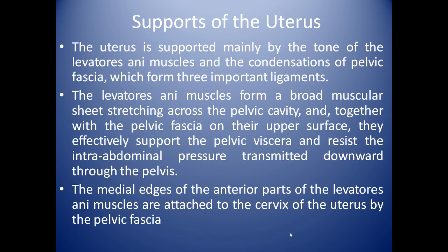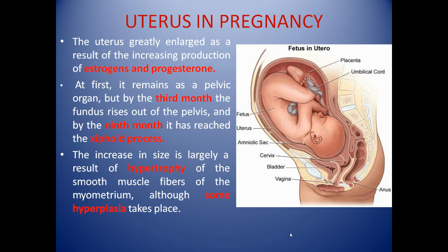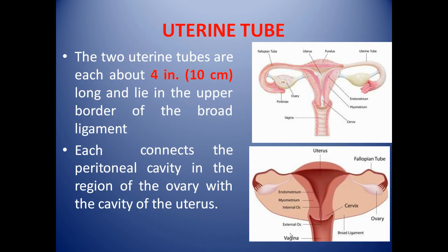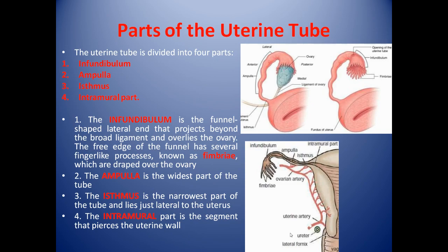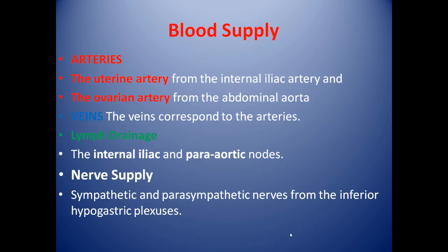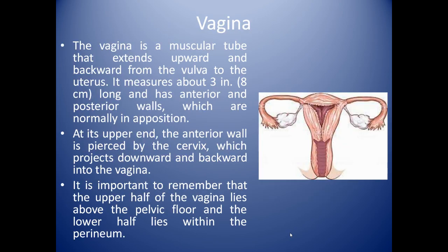We have also studied the supports, that is the ligaments, and how the uterus appears in pregnancy. We have also discussed the fallopian tube, its parts, arterial supply, venous drainage, lymph drainage, and nerve supply in our earlier video.